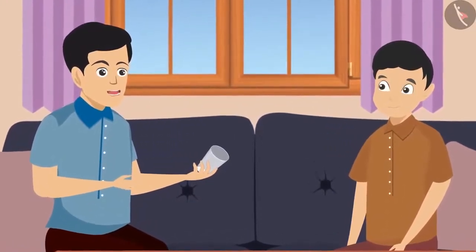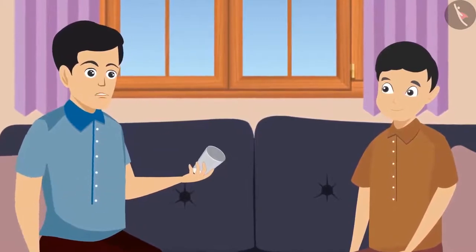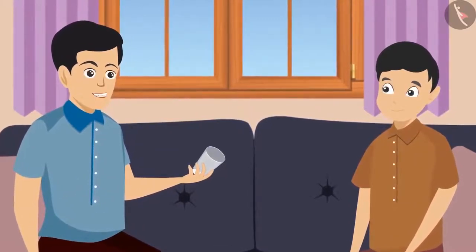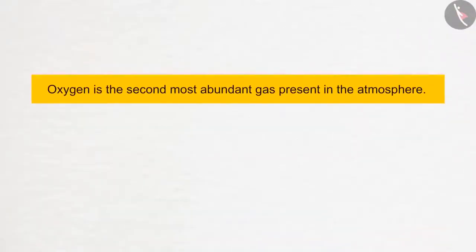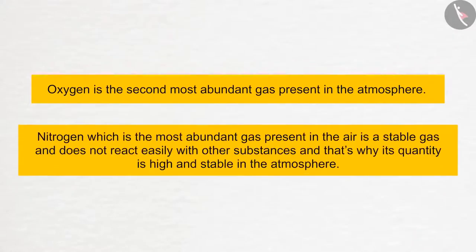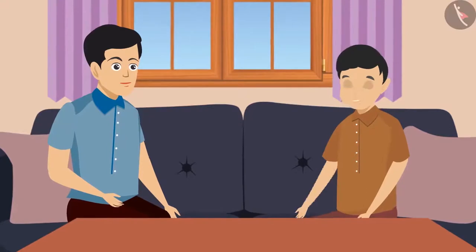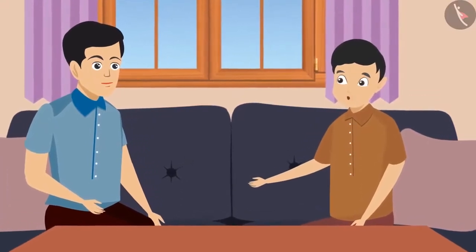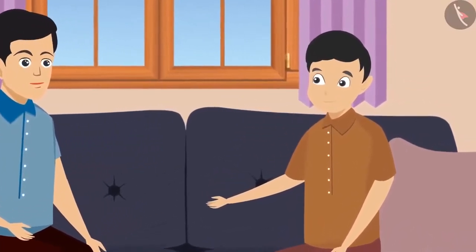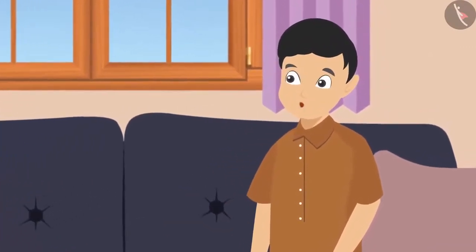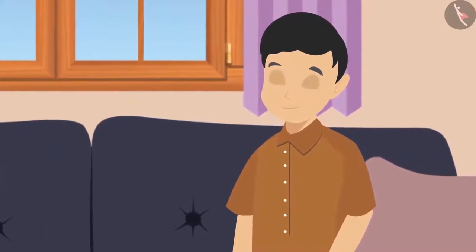Probably this is the reason that we like to breathe in places with a clear and clean environment, as the availability of oxygen is plentiful there. I have read that oxygen is the second most abundant gas in the atmosphere. Nitrogen, which is the most abundant gas in the air, is a stable gas and does not react easily with other substances, and that's why its quantity is high and stable in the atmosphere. We also suffocate where air pollution is high or where something burns, because many toxic substances also enter our body with the air.